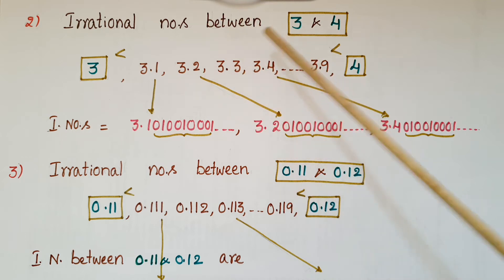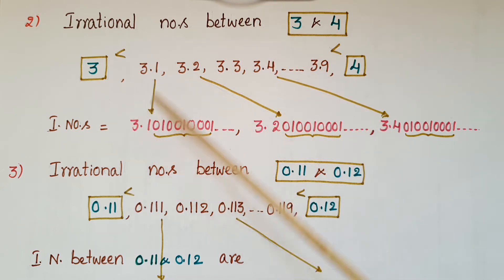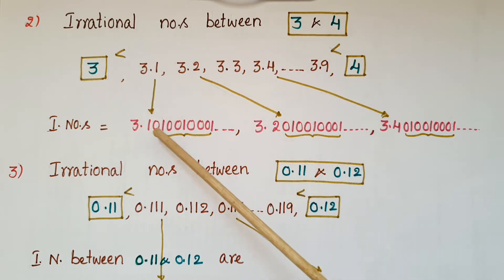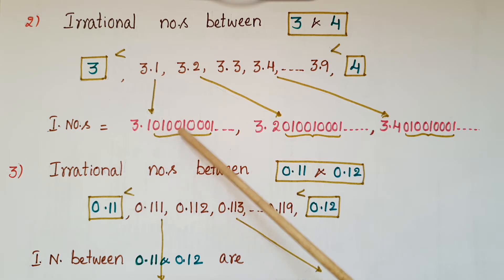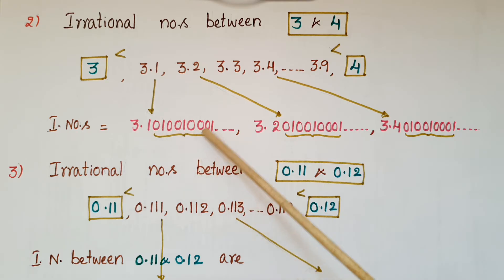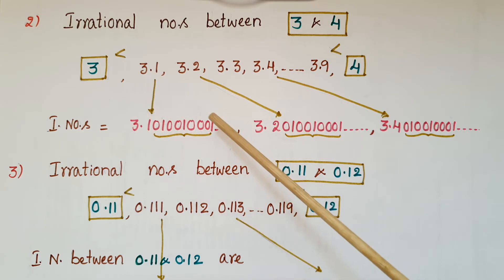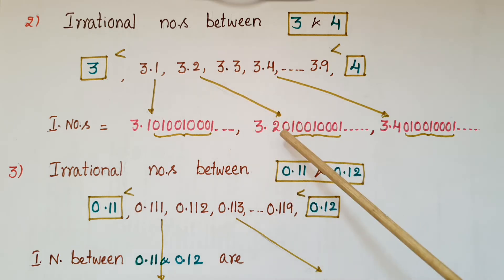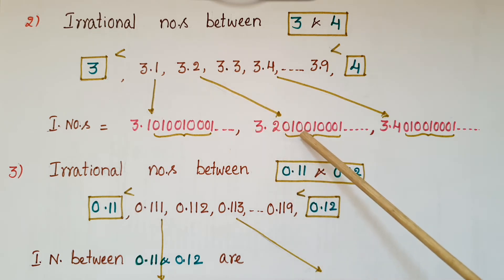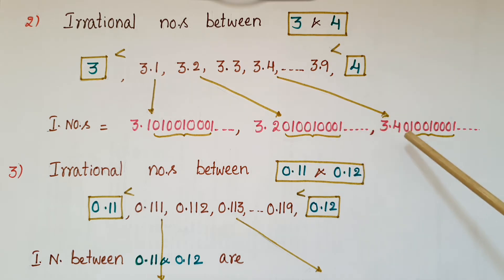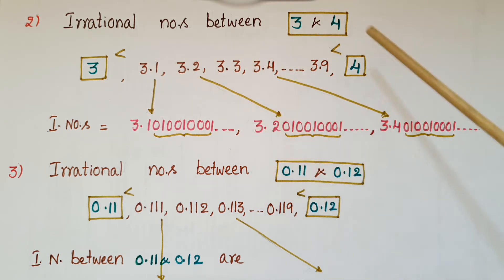We can use these numbers to write irrational numbers. An irrational number between 3 and 4 can be written as 3.101001000100001... and similarly 3.201001000100001... By adding a non-terminating, non-repeating decimal part, these become irrational numbers. Like this we can write more irrational numbers between 3 and 4.